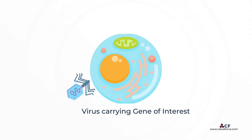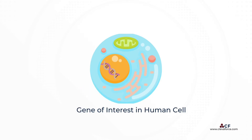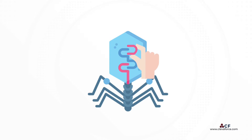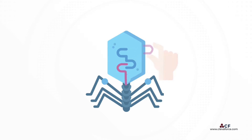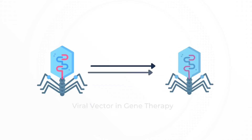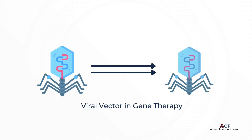Viruses like these could be used as vehicles to carry genes of interest into the human cell. What if the genes that cause disease in the virus can be removed and replaced with genes encoding a desired effect? For example, those coding for insulin production in the case of diabetes, leaving the genes which allow the virus to replicate intact. This is the basic concept behind viral vectors and their use in gene therapy.